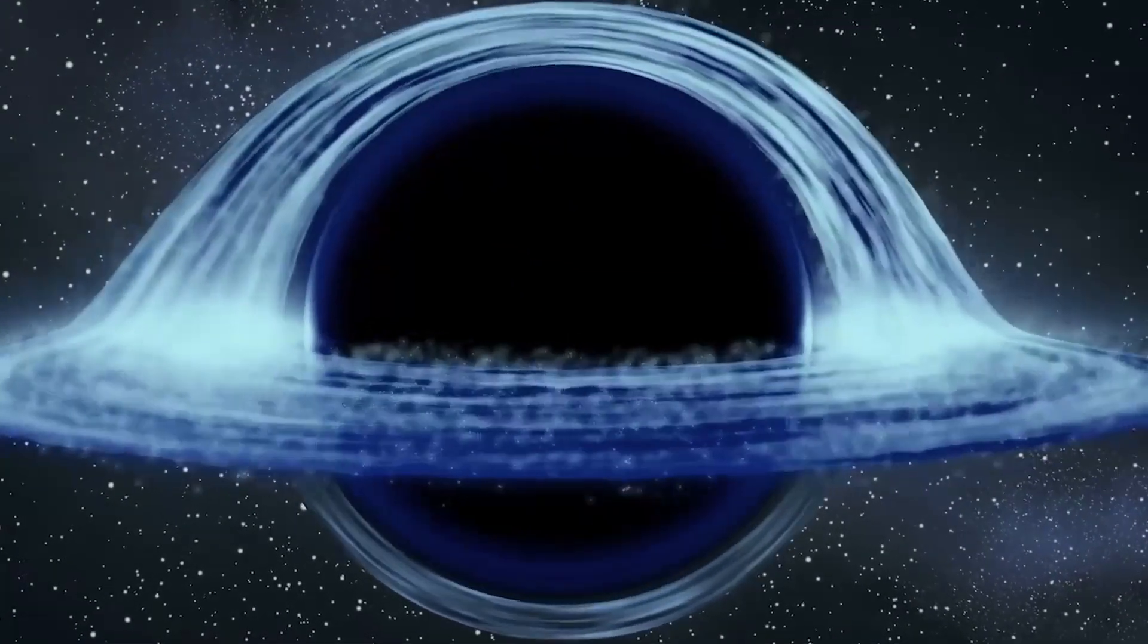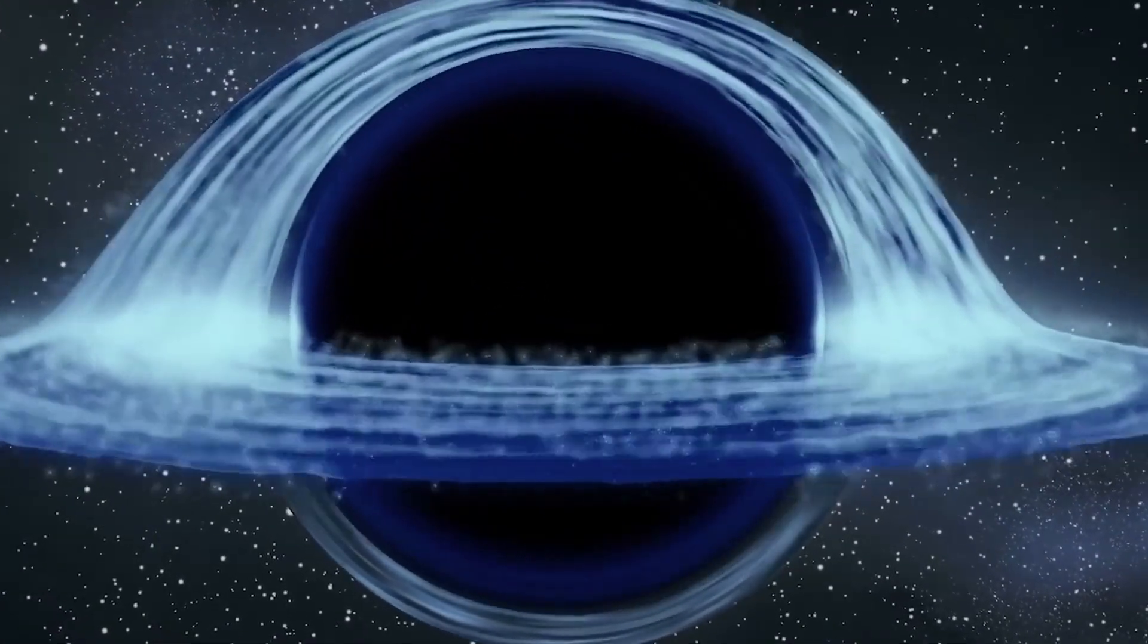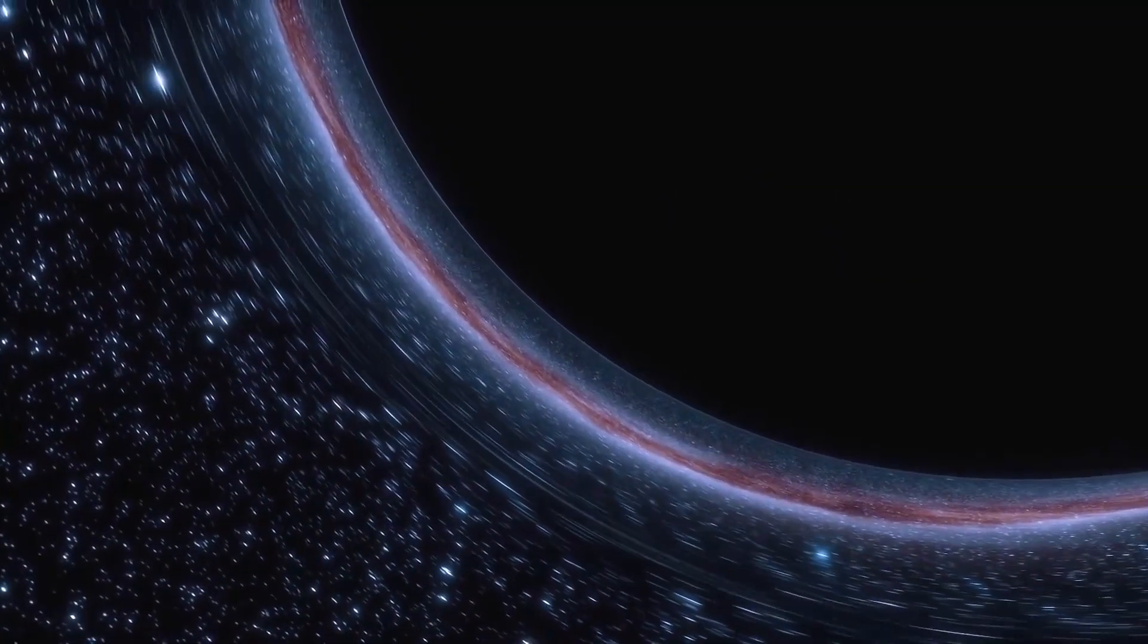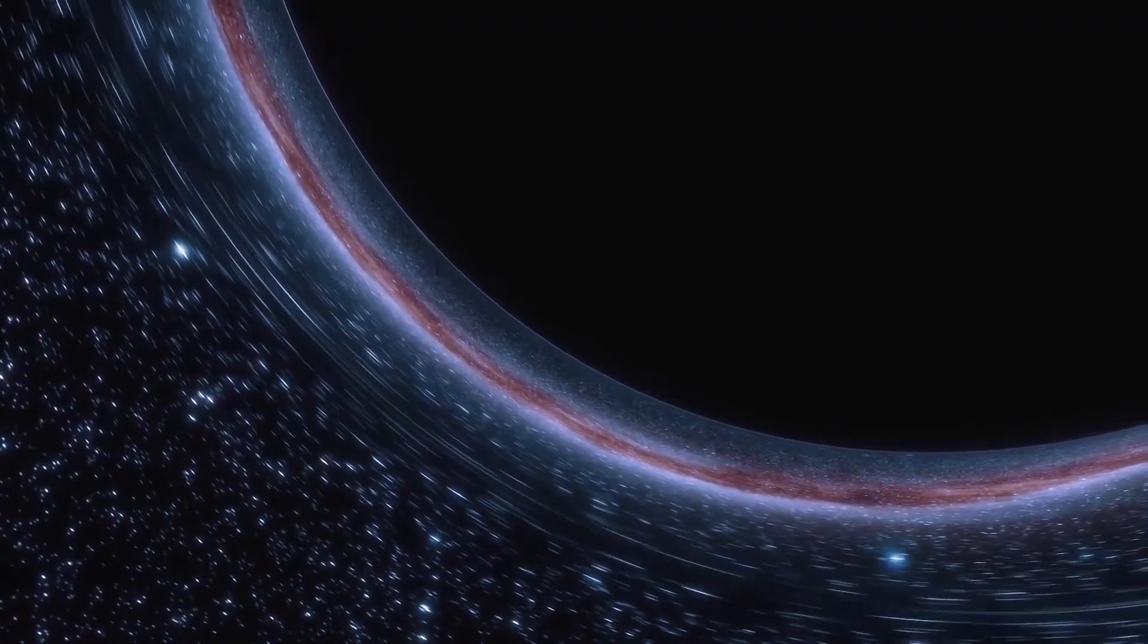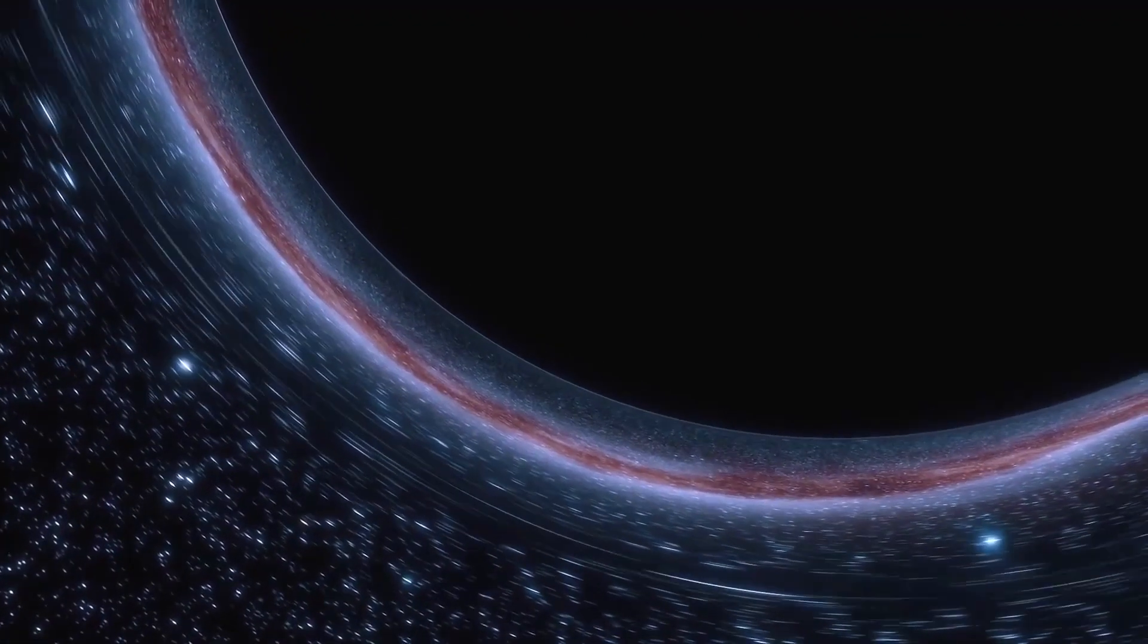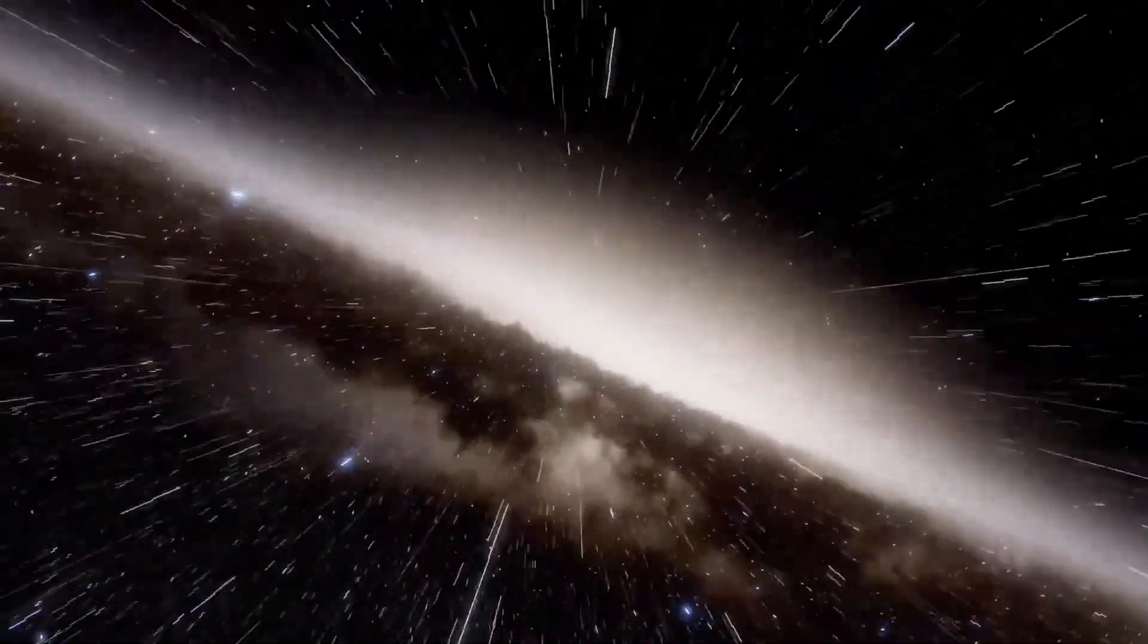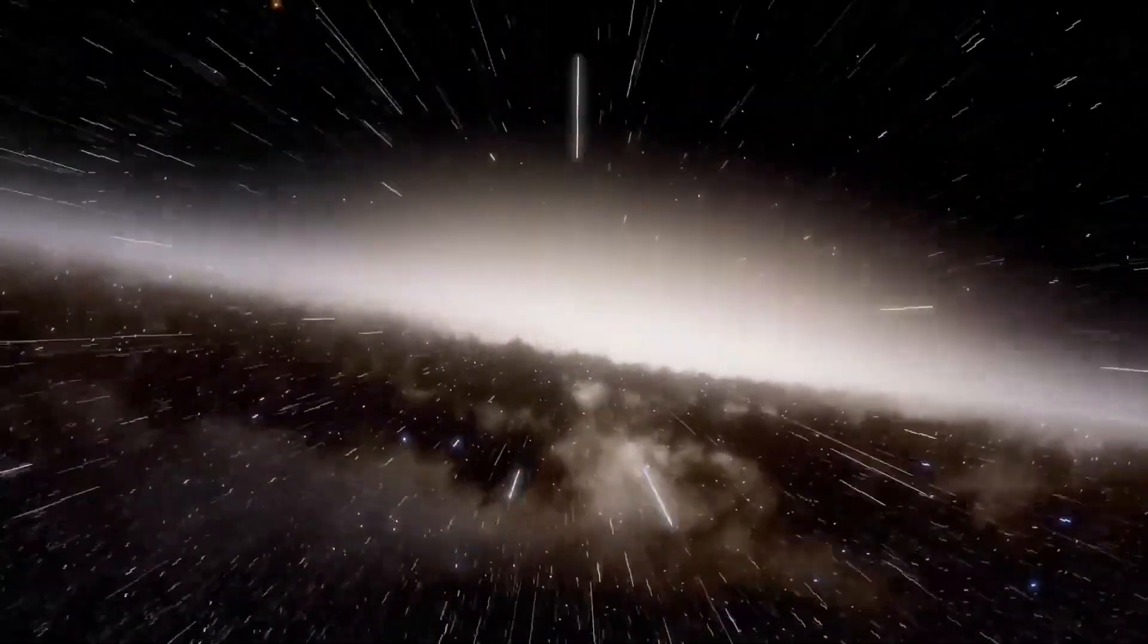Lead researcher Christopher Onken, a researcher at the Research School of Astronomy and Astrophysics at the Australian National University, said in a statement: Perhaps two big galaxies crashed into each other, funneling a whole lot of material onto the black hole to feed it.